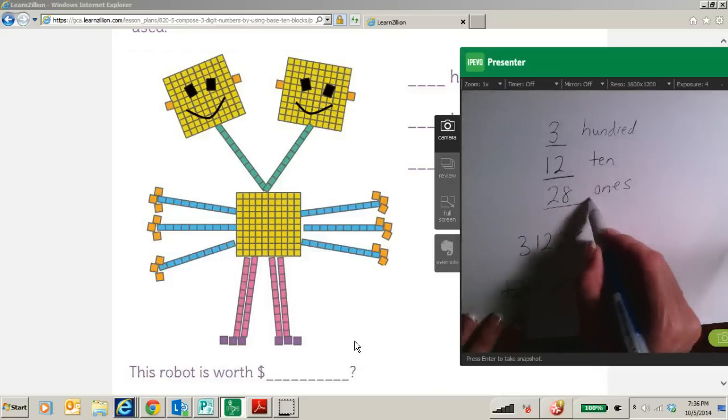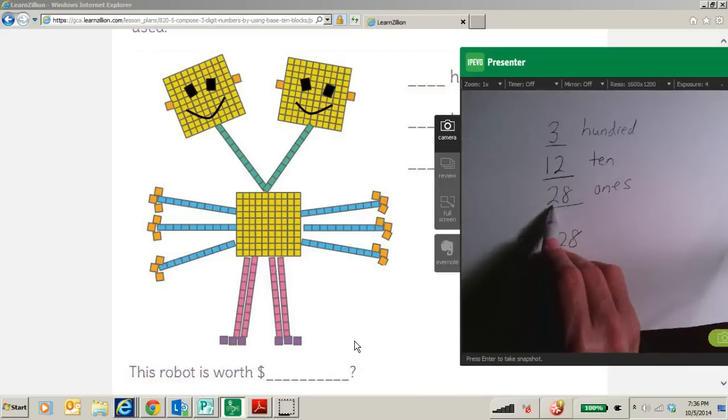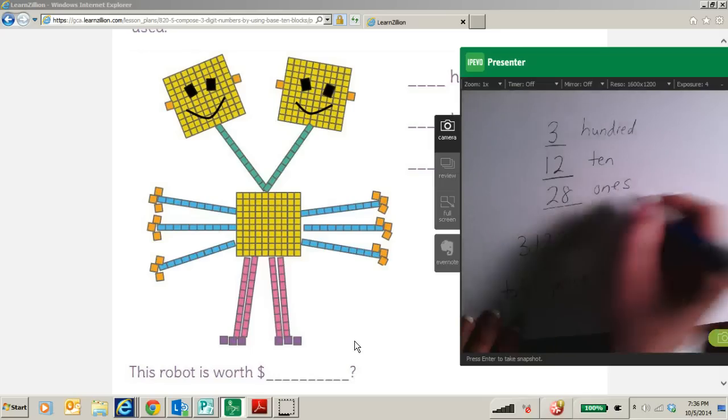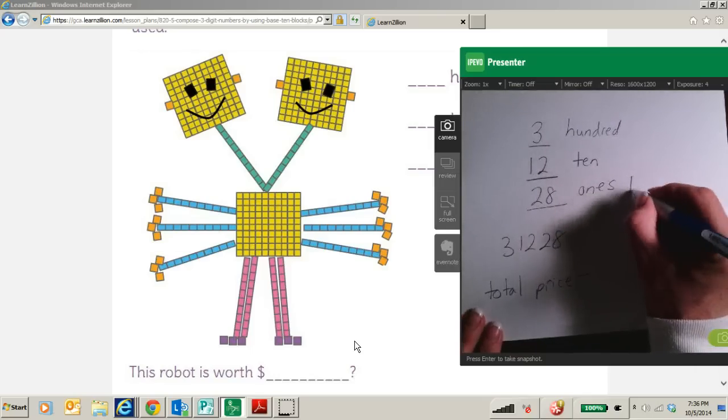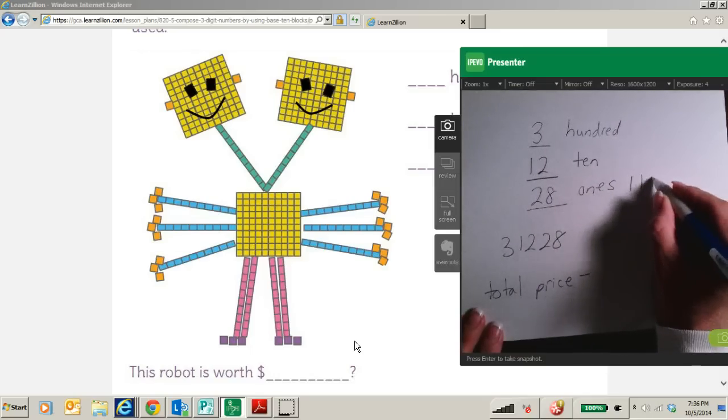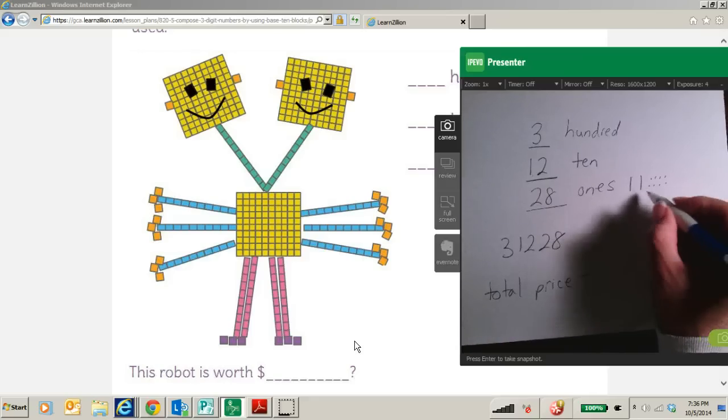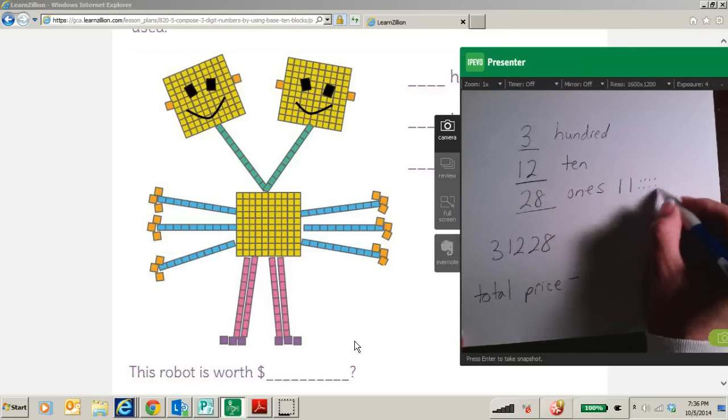So with my ones, I see that I have 2 tens and 8 ones. And so I am going to draw this like this. I know I have 2 tens, and I am going to use dots for my ones. So I have 2 rods for tens, and then 8 dots.